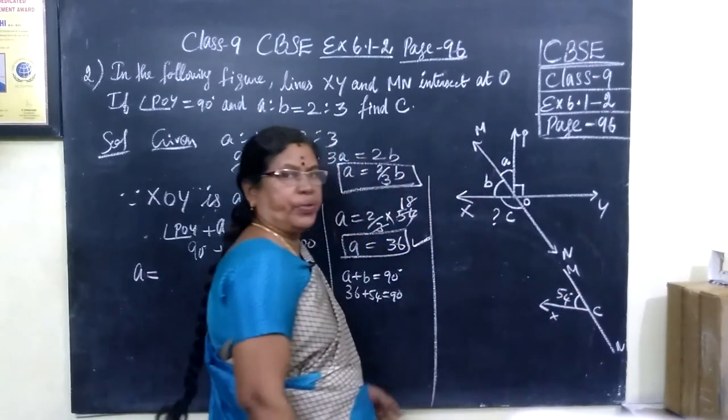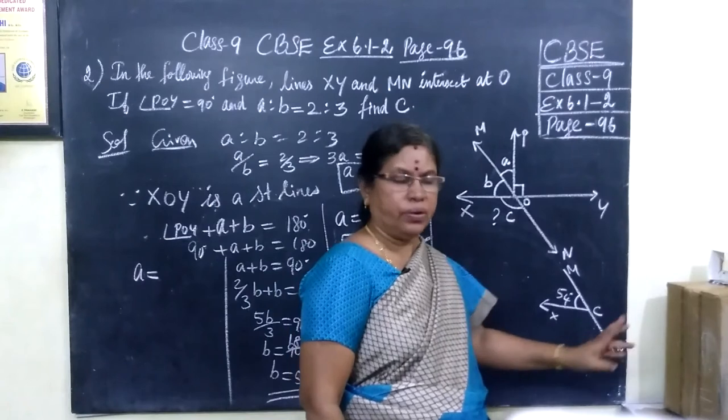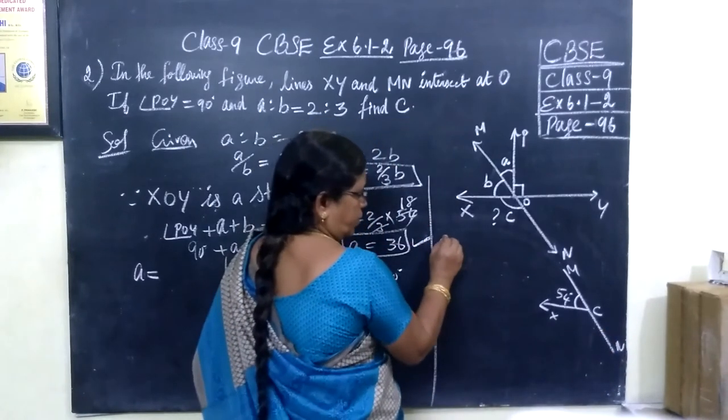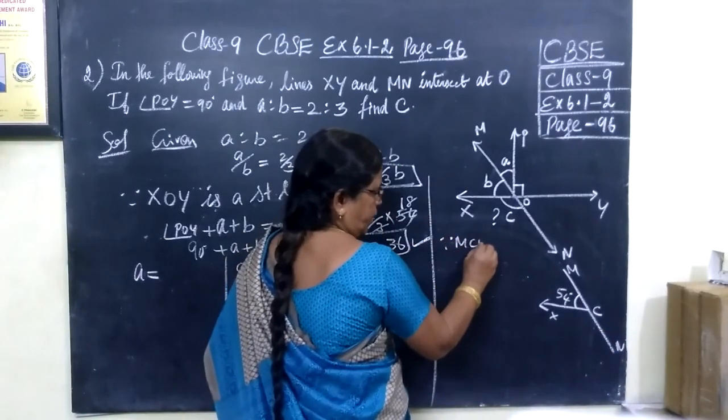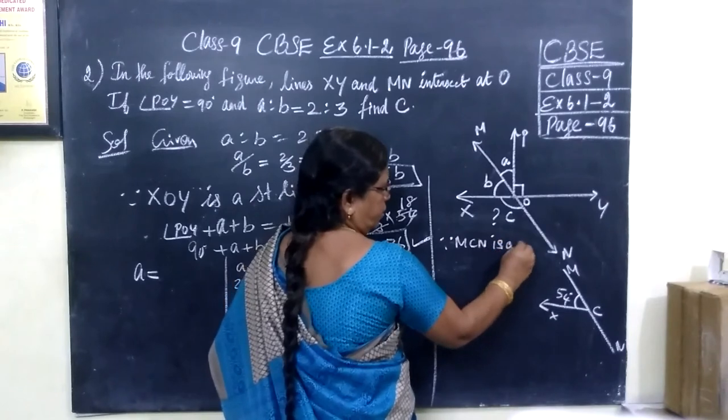And we know sum of the adjacent angles on a straight line is equal to 180 degrees. So since MON is a straight line.